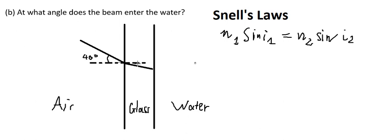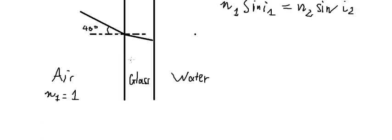To calculate the angle it entered to the glass, we know that air in here is about n1 equals 1. The glass, that's about n2, 1.5. And the water, n3, we got about 1.33.